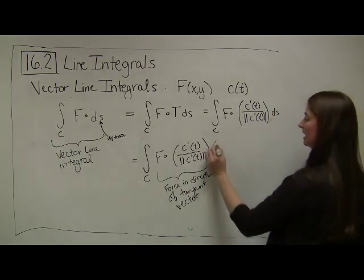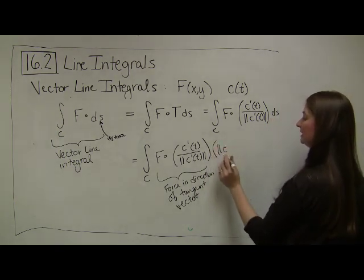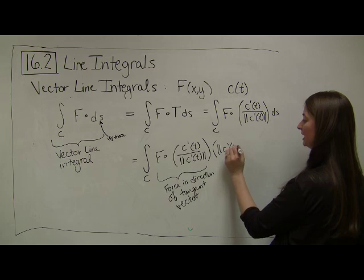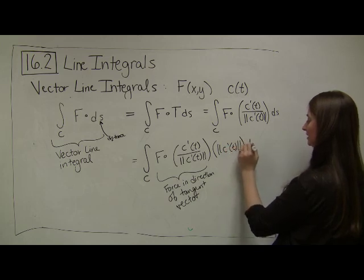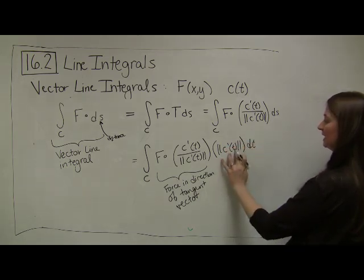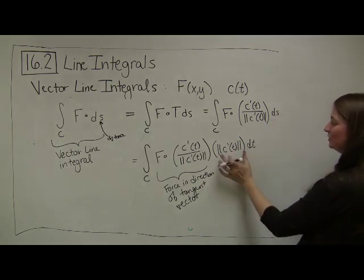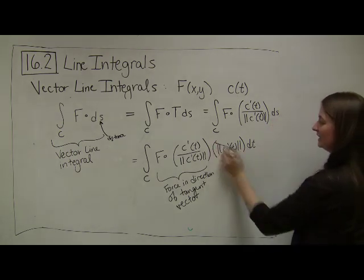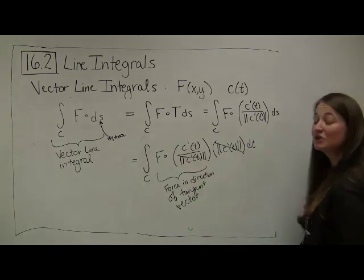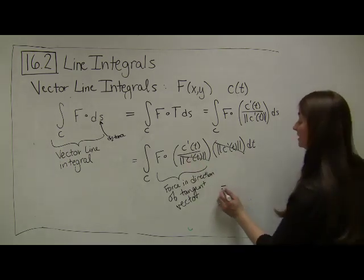And then instead of dS, I want to have dt there, and so I'm going to have to multiply it by the speed. Speed times time equals distance. That's why dS is equal to this times dt. These two things cancel, and now you can write down the final formula that's going to go into your notes.